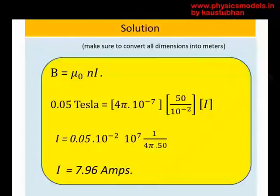We have to take care of those units and I is the thing that we have to find. So plug in these things, cross multiply the numbers and you will get that I is 7.96 amps. That's a neat little problem.